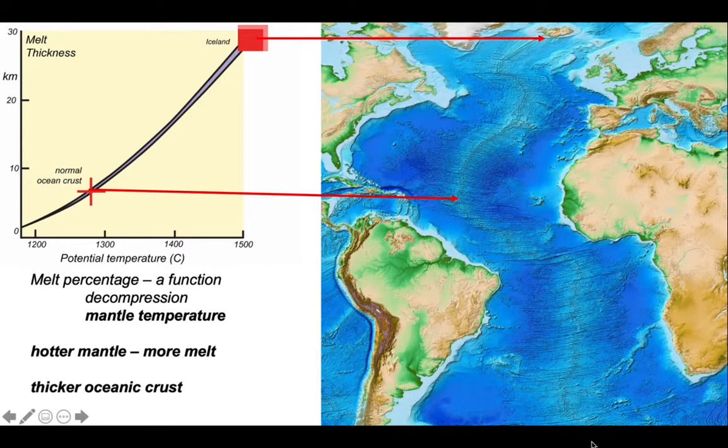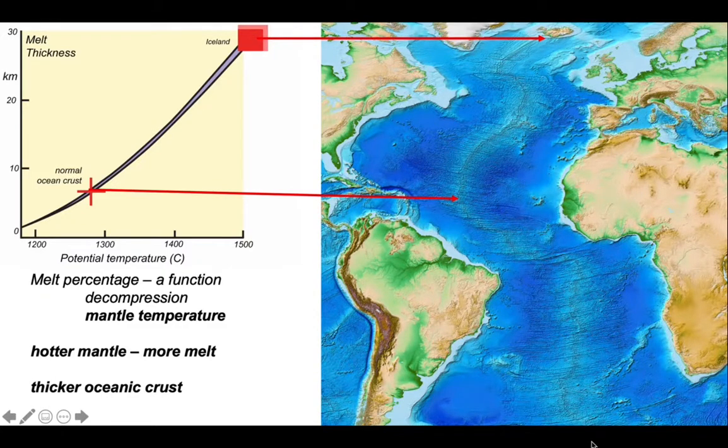We can see this on the bathymetric map of the oceans. By and large, the mid-Atlantic ridge is below sea level and presumably is underlaid by normal oceanic crust. In contrast, Iceland, we infer, has got thick oceanic crust beneath it and constantly pokes out of the water.